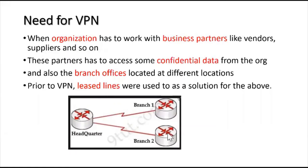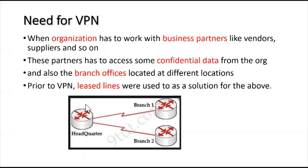If branch two wants to communicate with branch one, or if the headquarter, branch office one, and branch office two all want to communicate and access information as if they are on one network, then you need to connect another point-to-point connection between the branch offices. If the organization decided to open another branch office at a different location, the headquarter would again need a lease line implemented with that branch office, and similarly that branch office would need to connect to branch one and branch two as well.